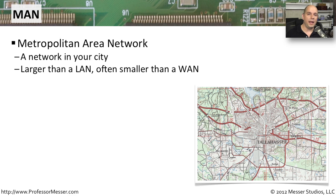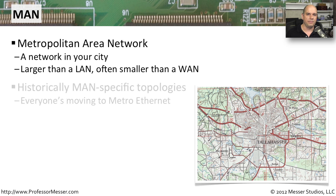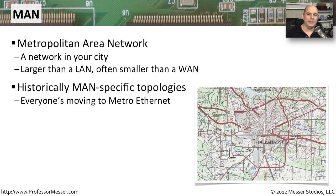A MAN is a metropolitan area network. This is a network that is bigger than a LAN and smaller than a WAN, usually just within a city. Historically, MANs have connected via protocols and connectivity very specific to the metropolitan area, but these days we seem to be standardizing more and more on Ethernet. There is a type of Ethernet called Metro Ethernet or Metropolitan Ethernet, and it's a very common way to connect devices that might be in the same city.